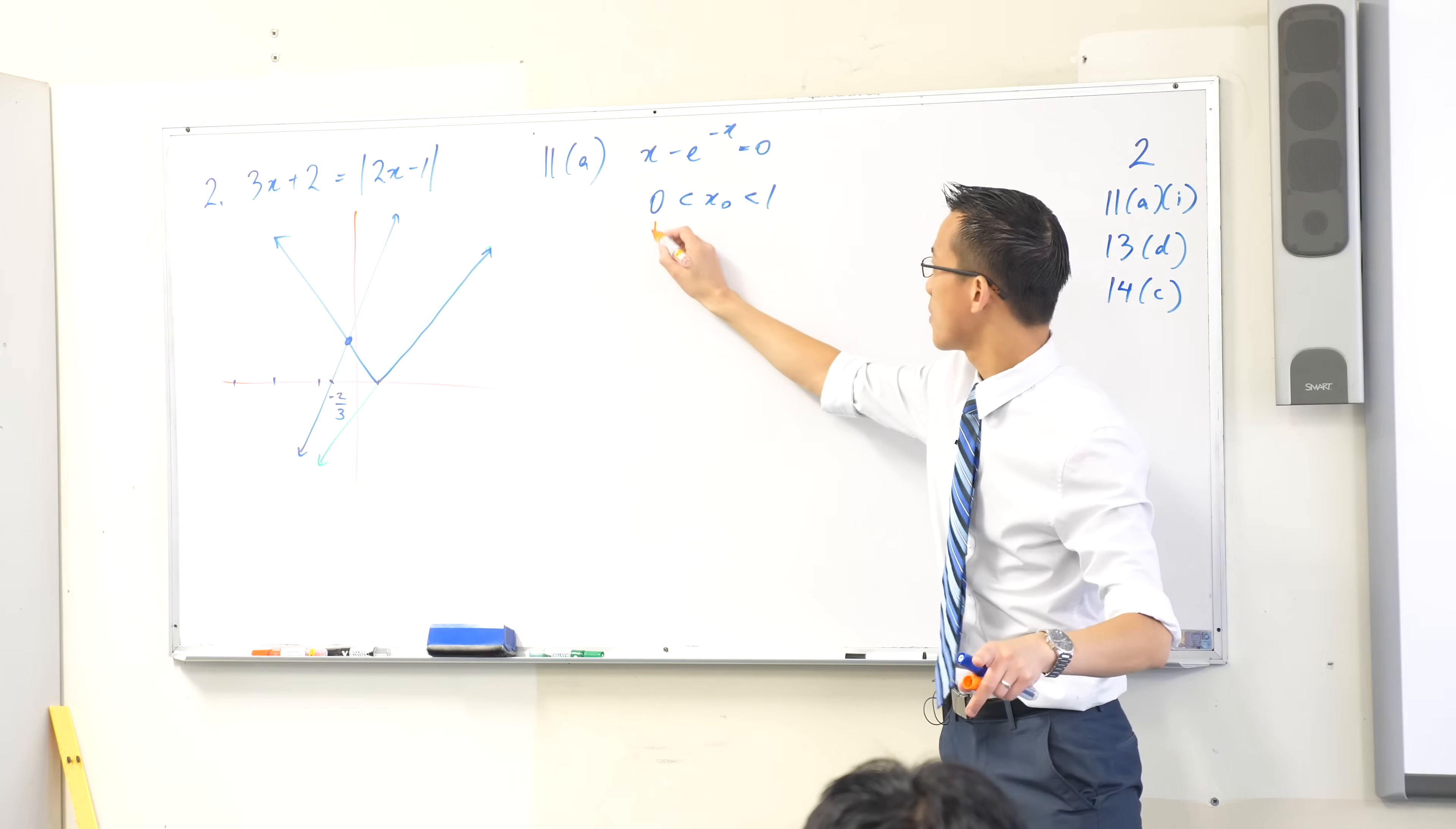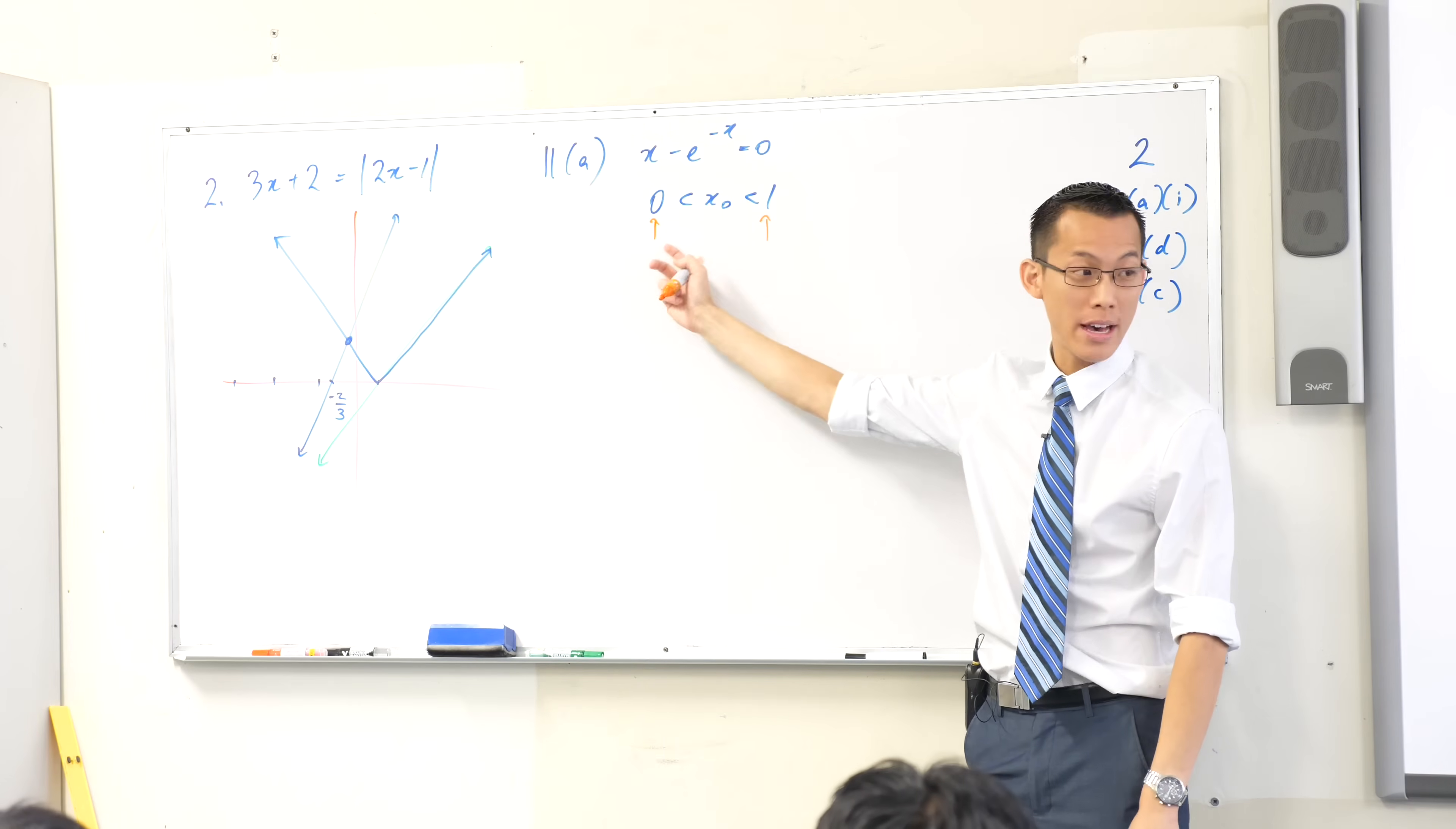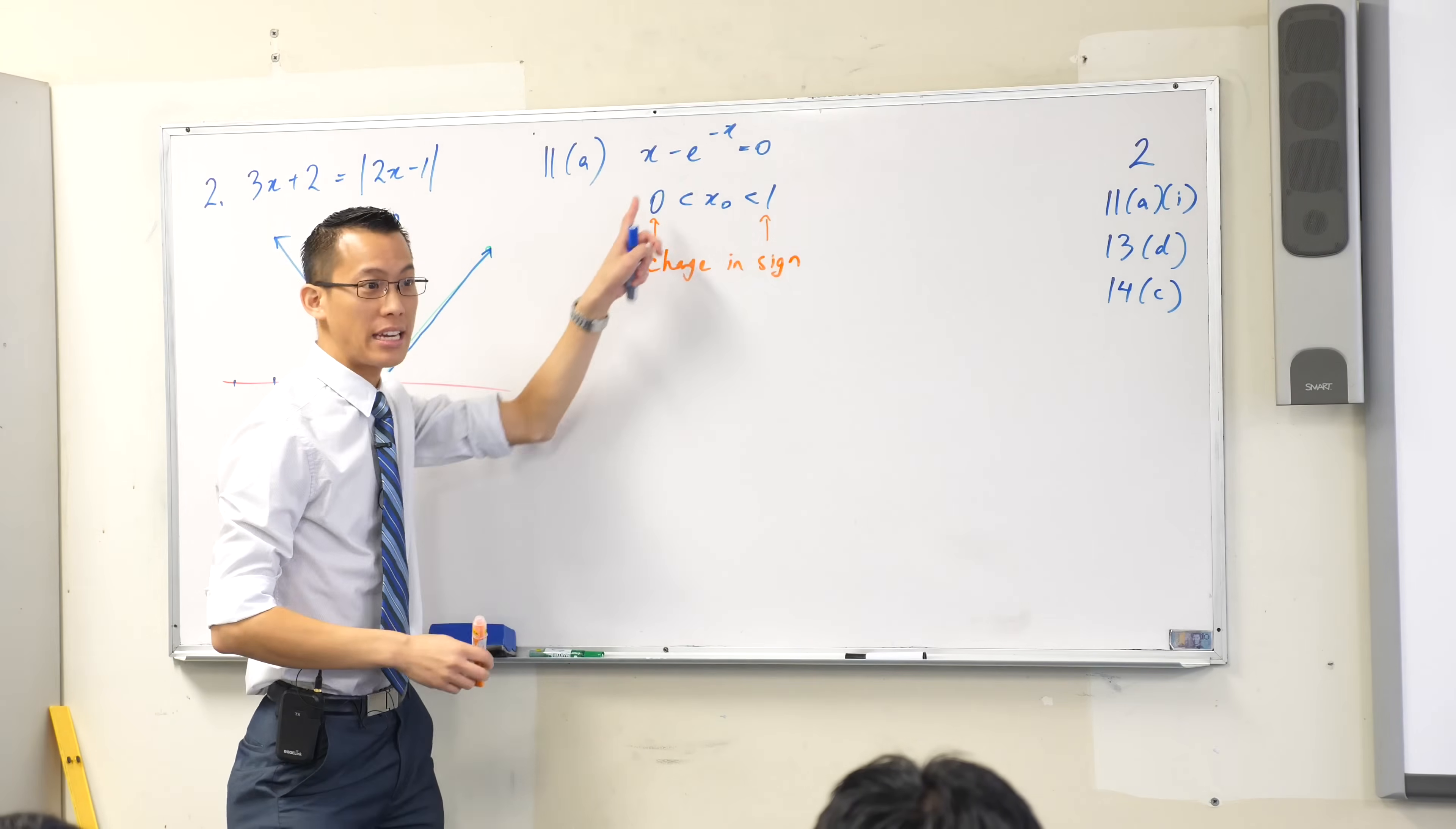But again, I want you to think. Think about this value and think about this value. If there's a root between there, right? Then what's going to happen between these two values? There's a change in sign. There's a change in sign. Either you go from positive to negative or negative to positive.